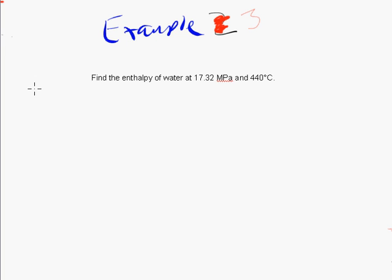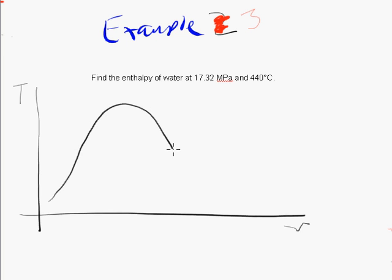let's start by drawing a TV diagram. The first thing that we need to do, as usual, is decide if we have compressed liquid, saturated water, or superheated vapor, or if we're on one of the boundaries, the saturated liquid line, maybe, or the saturated vapor line.